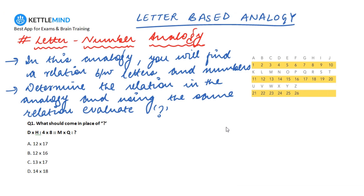In letter-number analogy there is an analogy where you will find a relation between letters as well as numbers. We have to determine the relation between letters and numbers in the given analogy, and once we get the relation we have to apply the same relation in the other half in order to evaluate the question mark — which is the same thing written in the blue text on your screen.